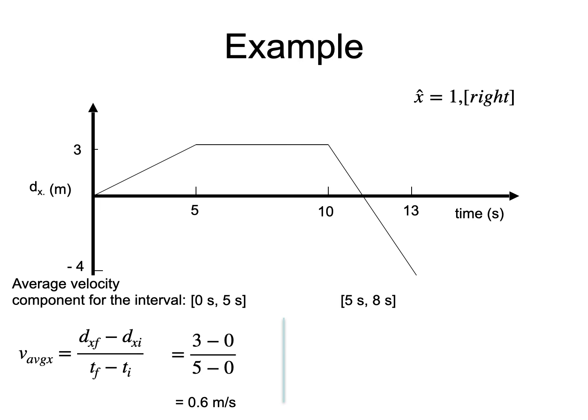Next is the interval 5 to 8 seconds. The component of position is always 3 meters from 5 to 10 seconds, so it is not surprising that substituting the information leads to an answer of 0. The object, on average, did not move.